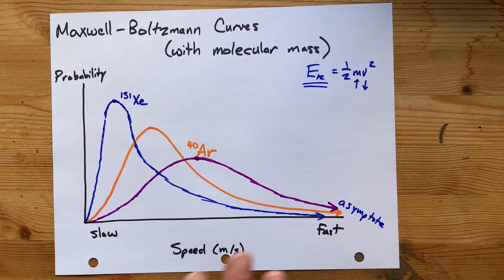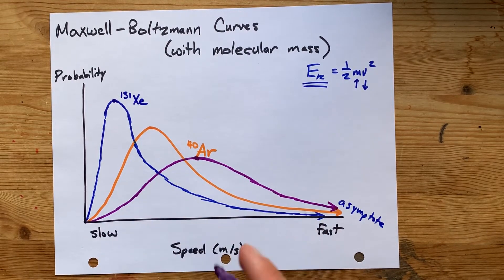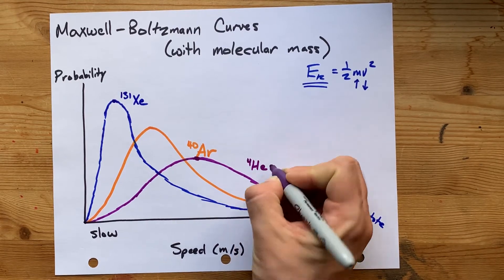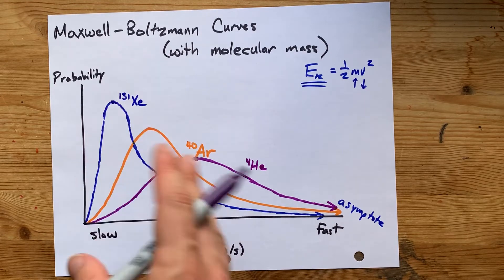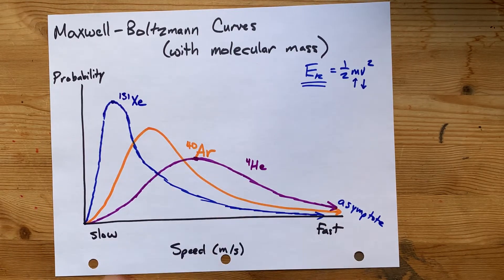Nice. So for the lighter particles, I'll just label this helium-4 so you can see how these molecular masses are changing the distribution.